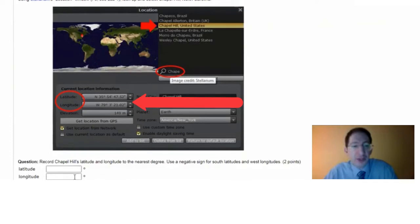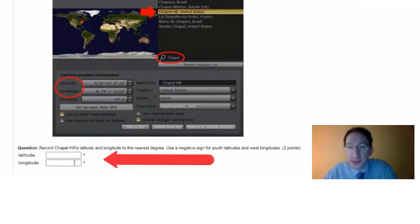You can then enter those numbers here, round them off to the nearest degree, and remember to use a negative sign for south latitudes and for west longitudes.